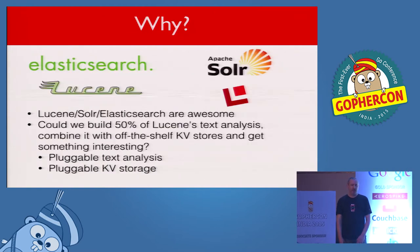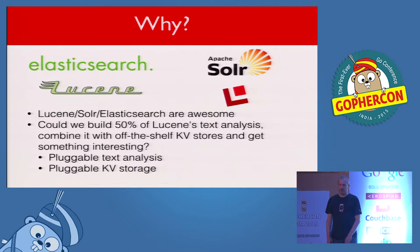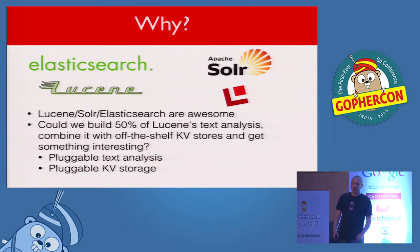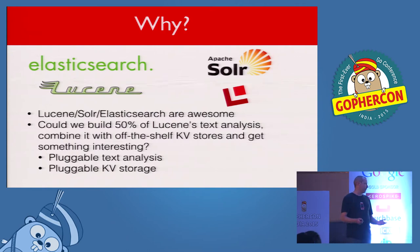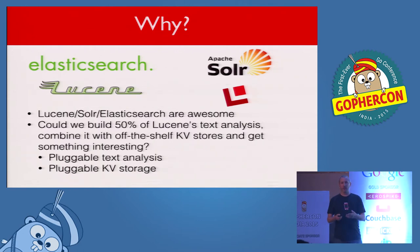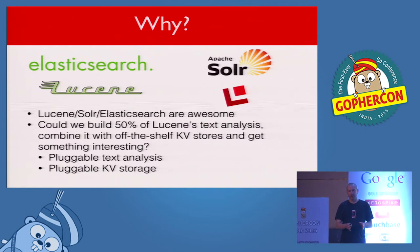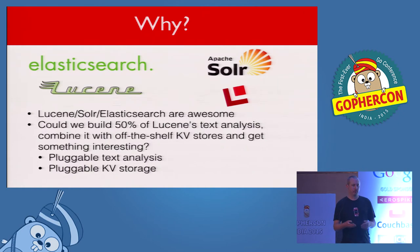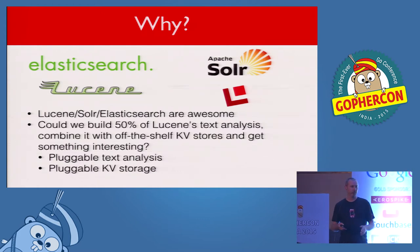A lot of people ask: why another full-text search? We've already got Lucene, Elasticsearch, and Solr built on top of that — and these are really great products. I've built and delivered solutions to customers using them. But sometimes your architecture doesn't already have Java or the JVM involved, and adding that is kind of a burden. So we started asking ourselves: could we build 50% of Lucene's text analysis, combine that with an off-the-shelf KV store, and maybe something interesting comes out of it? And we think it did.